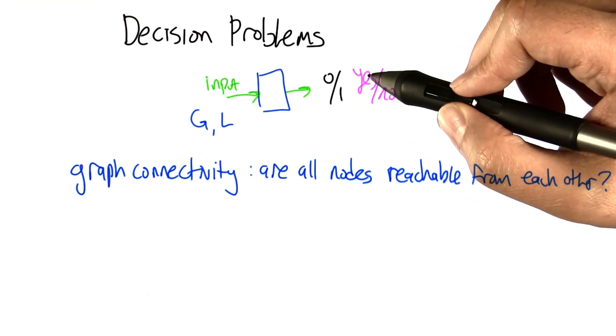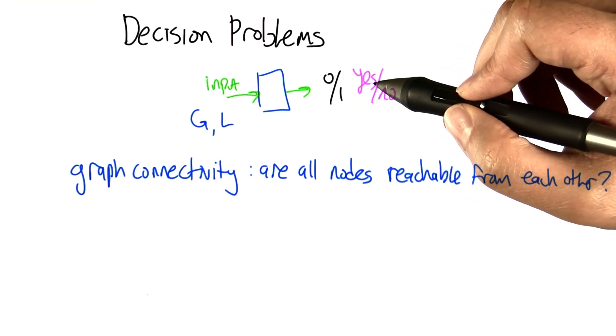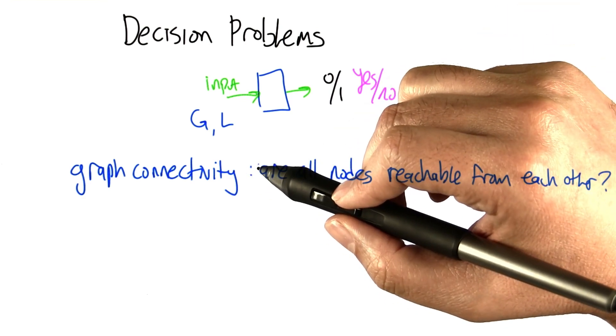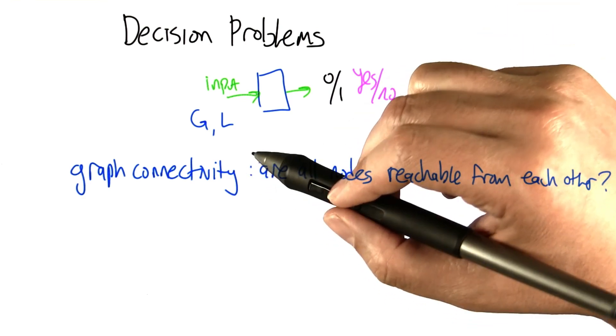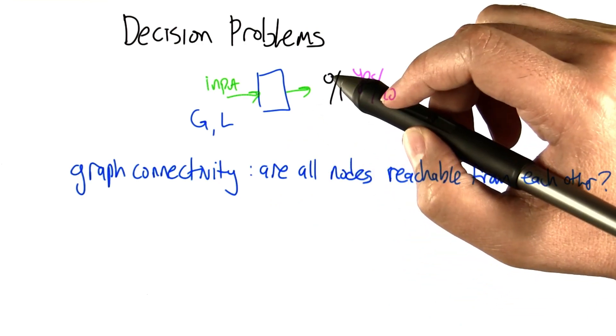So even though this output is very simple, just 0 or 1, one bit, it can actually be fairly complicated, sometimes very complicated, to take the input and decide whether it's a 0 or a 1.